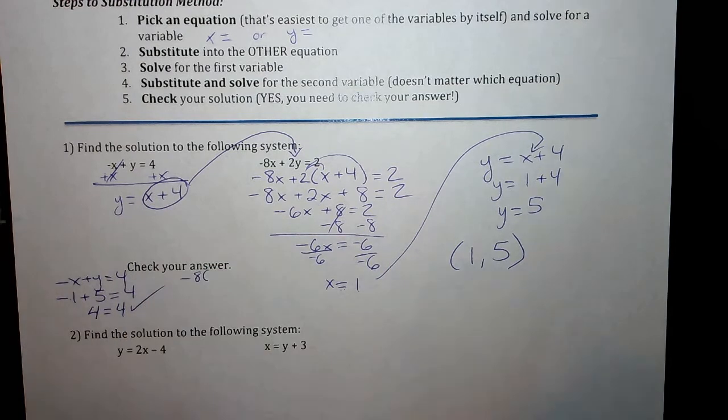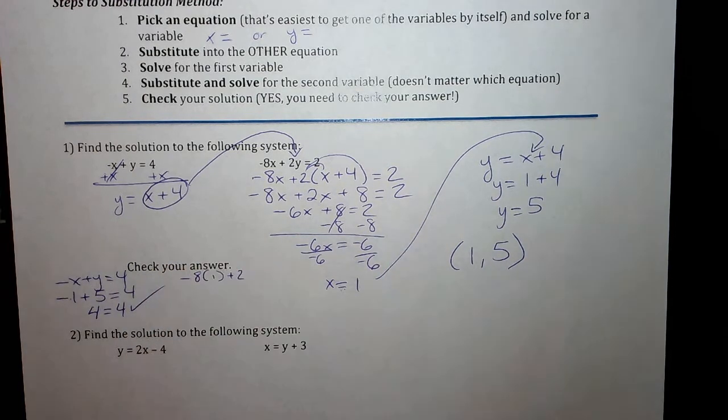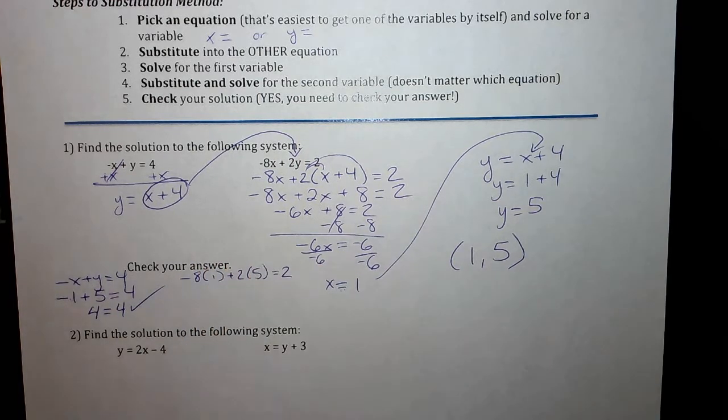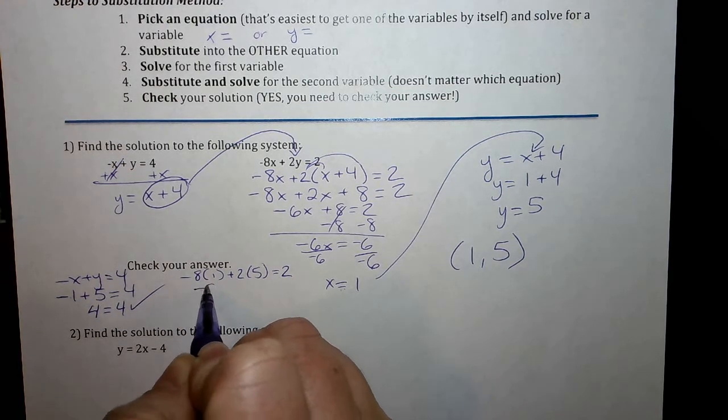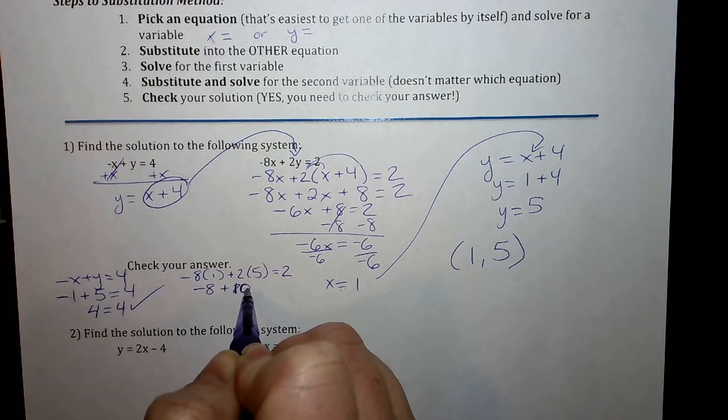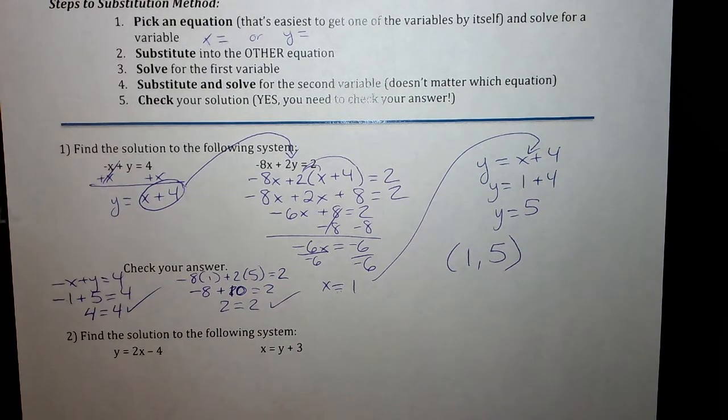Second equation, I'm going to plug these numbers in. 1 in for x, 5 in for y. And again, see if it works out because remember our solution has to work in both equations. So negative 8 times 1 is negative 8. 2 times 5 is 10. I add those together. 2 equals 2. Yes, we know our answer is correct.